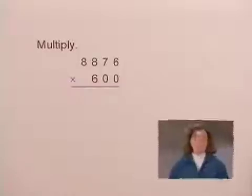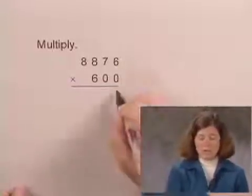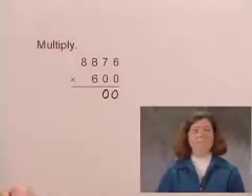Now since we're multiplying by 600, we can think of this as 6 hundreds and write two zeros for the multiplying by 100. And then multiply 8,876 by 6.